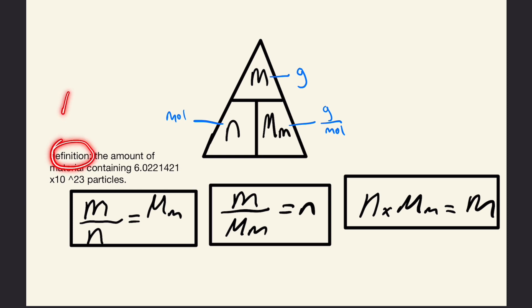An important definition to know is the definition of a mole. A mole is the amount of material containing 6.022×10²³ particles. This is Avogadro's number, an incredibly large number that we will use in these calculations.